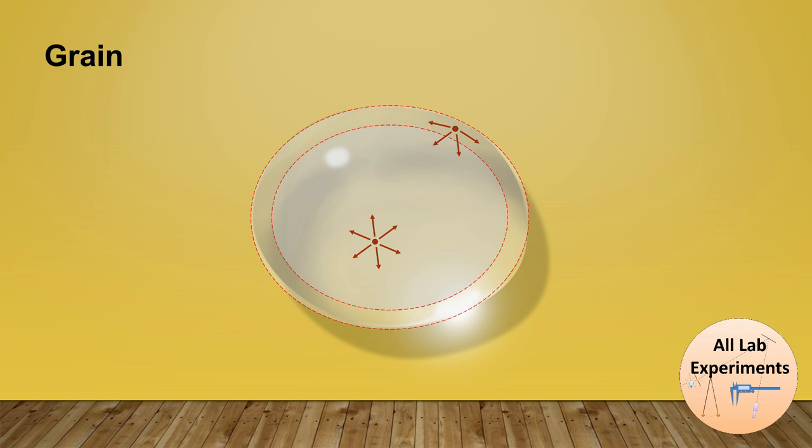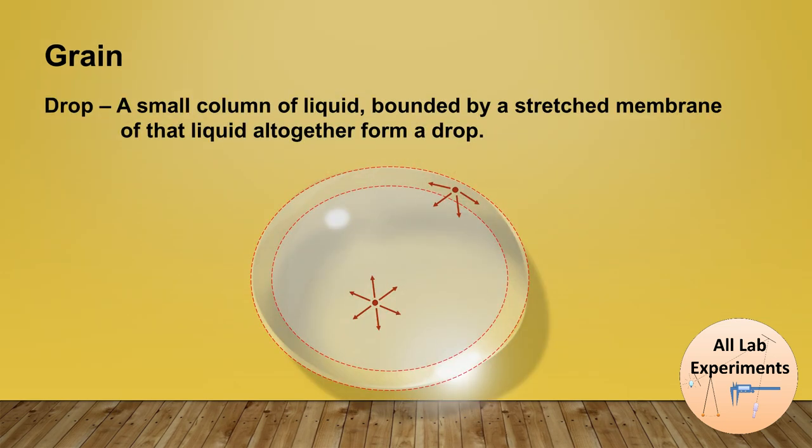But the part of the drop situated near the surface is interacting towards one side. So as a result, the surface of water acts like a stretched membrane. So how would you define a drop then? A drop is a small column of liquid bounded by a stretched membrane of that liquid. Altogether they form a drop.